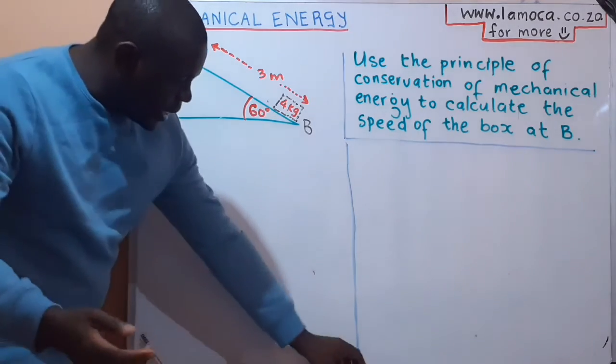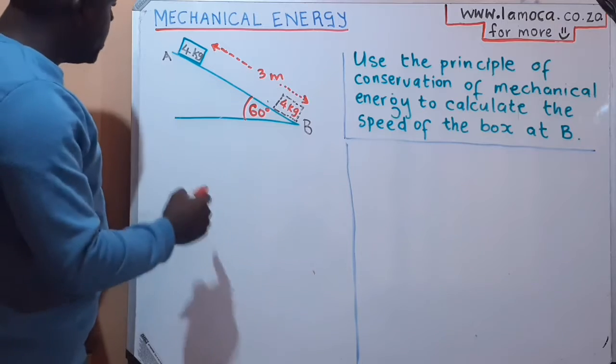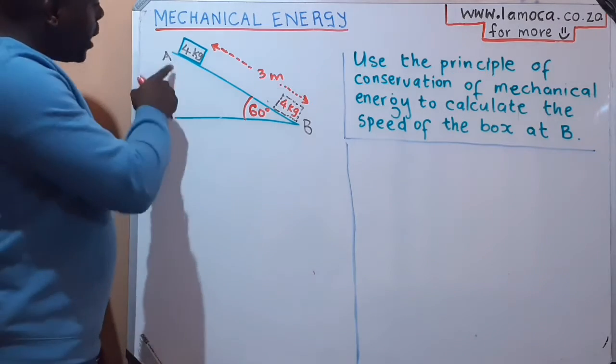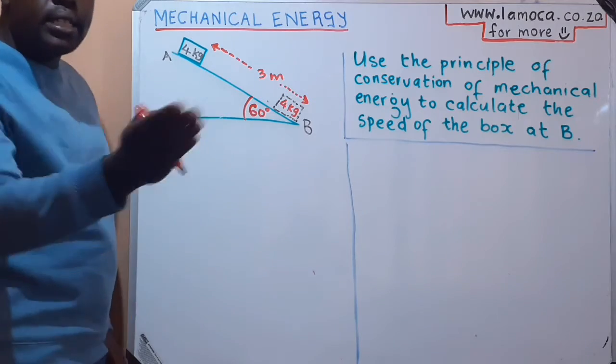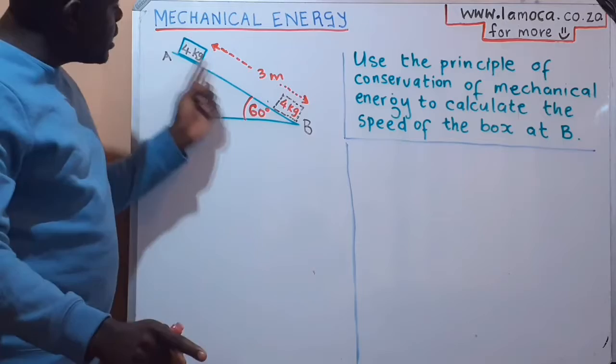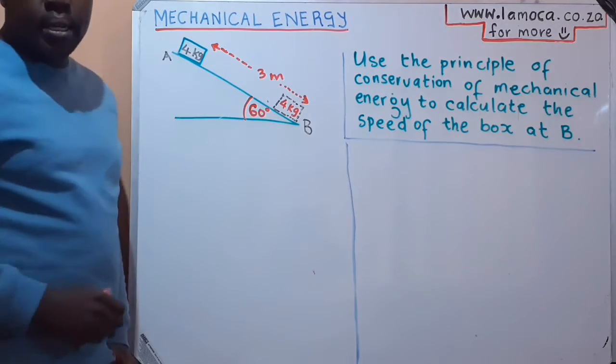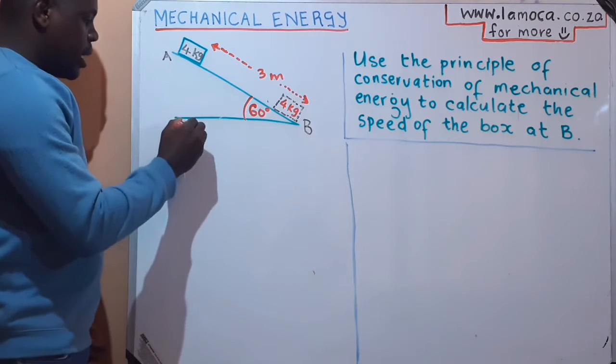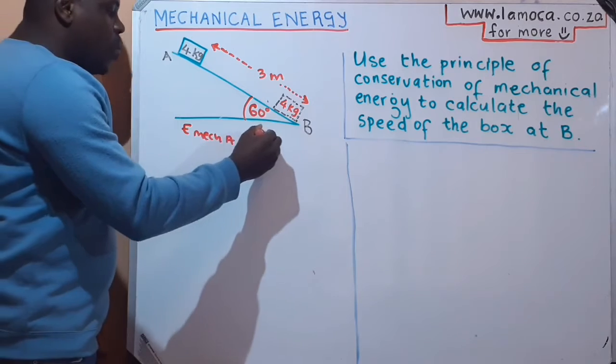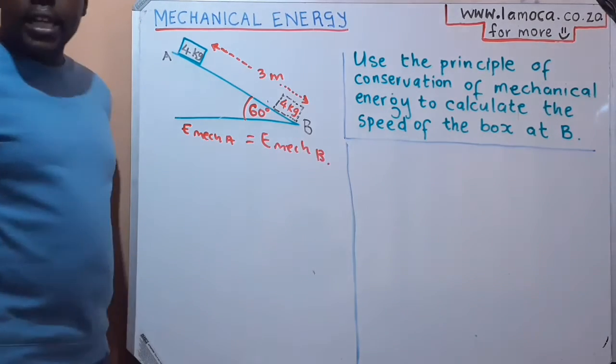We are asked to use conservation of mechanical energy, which mathematically for this situation would be the total mechanical energy from A to B in an isolated system. We know that the system is isolated because this is frictionless. So the total mechanical energy in an isolated system remains constant.